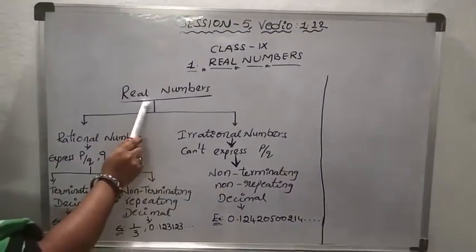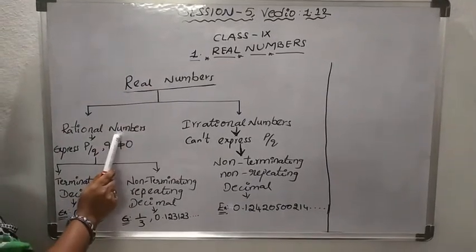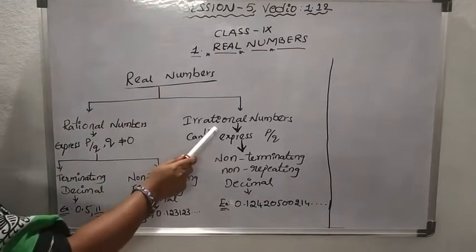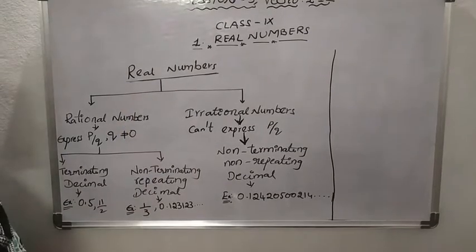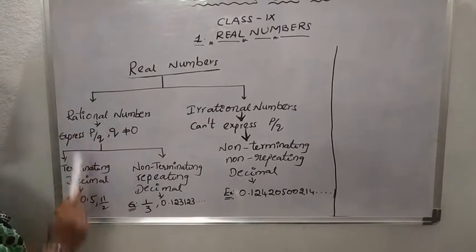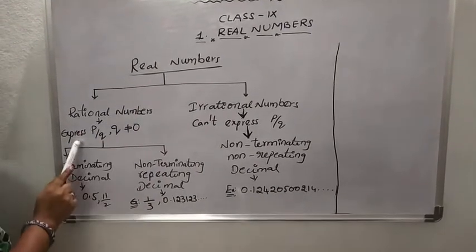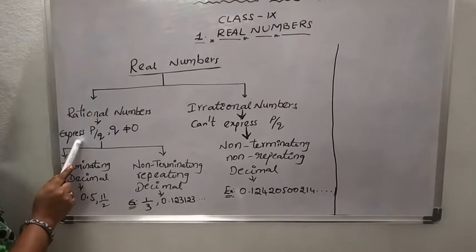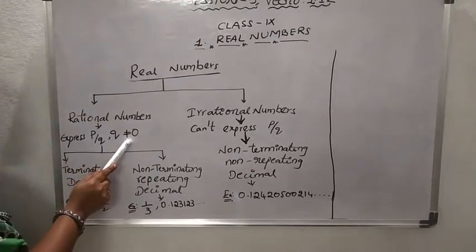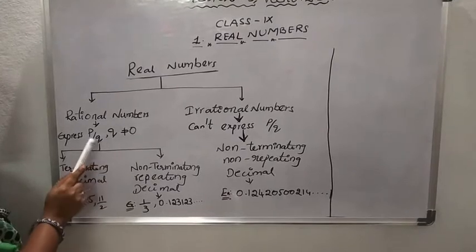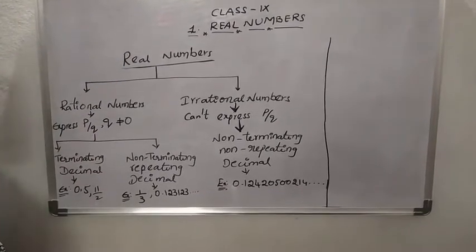Real numbers means the combination of rational numbers and irrational numbers is called as real numbers. Rational numbers means when we express any number in the form of p by q, where q is not equal to 0, such type of numbers are called as rational numbers.